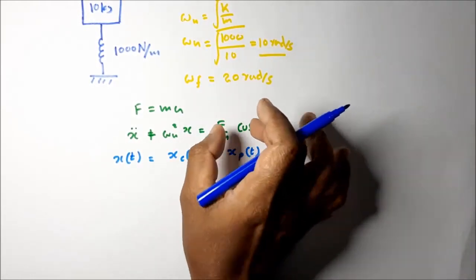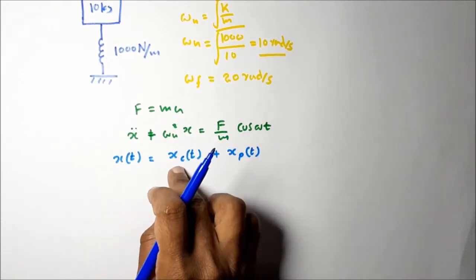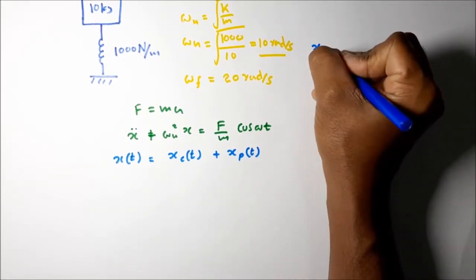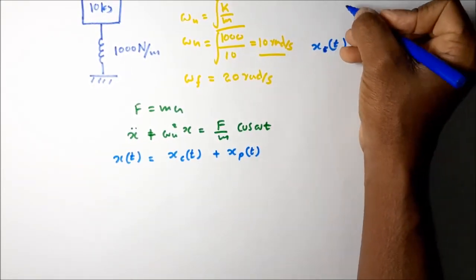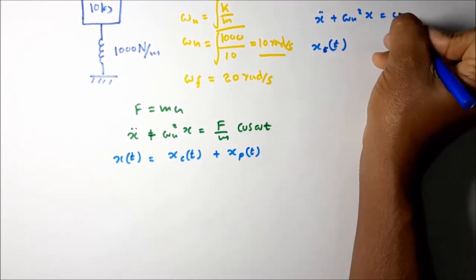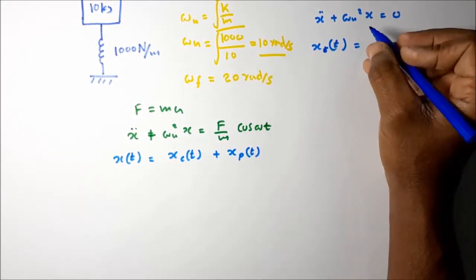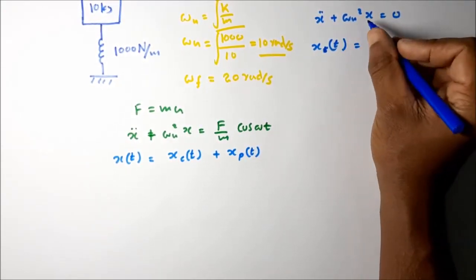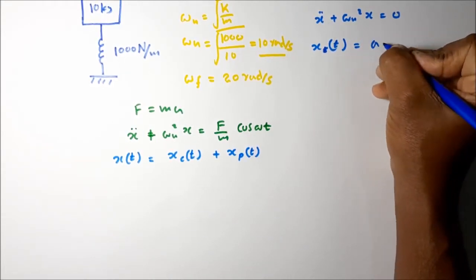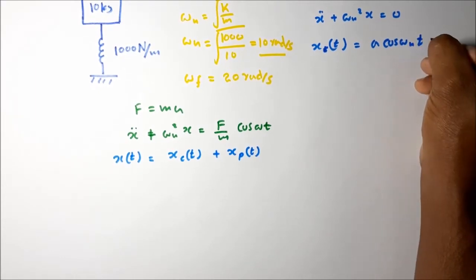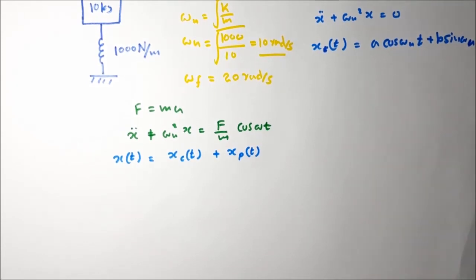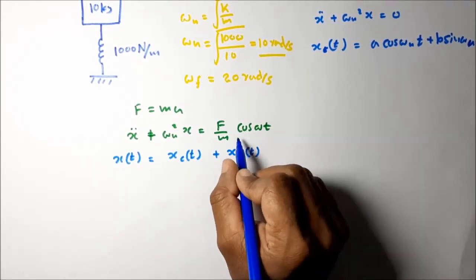By equating the right-hand side to zero, we get the complementary function solution x_c(t). Setting x'' + ωₙ² x = 0 gives simple harmonic motion, so we get: x_c(t) = A cos(ωₙ t) + B sin(ωₙ t).